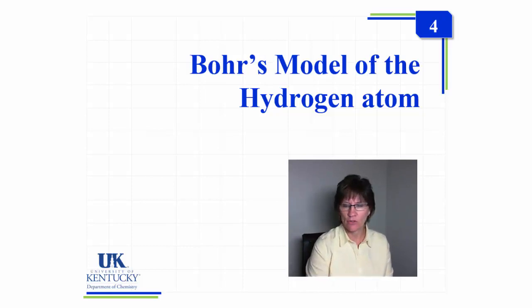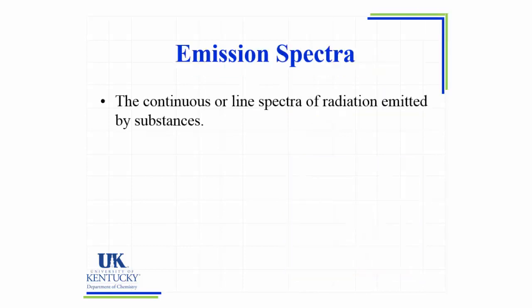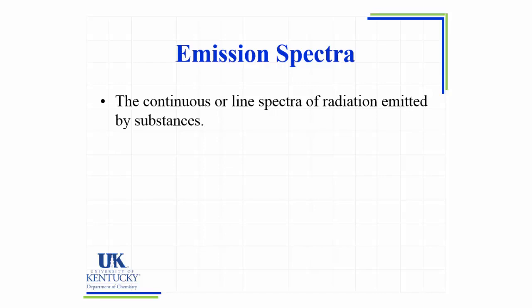Let's begin with what a hydrogen spectrum is. So what is an emission spectrum? This is a continuous or a line spectra of radiation emitted by a substance. Continuous would be like a rainbow, seeing all the various colors laid out. A line spectrum just gives you individual lines at various wavelengths.